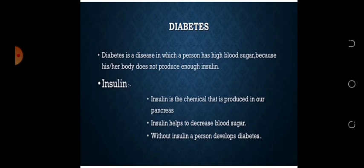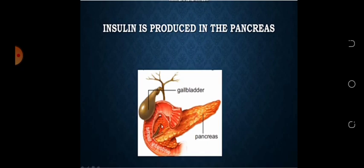اگر insulin pancreas میں موجود نہ ہو تو patient کو diabetes ہو جاتی ہے۔ یہ جو diagram آپ دیکھ رہے ہیں یہ ہمارا pancreas ہے۔ اس کا ایک leaf-like structure ہوتا ہے اور insulin is produced in our pancreas، اسی pancreas کے اندر insulin بنتی ہے۔